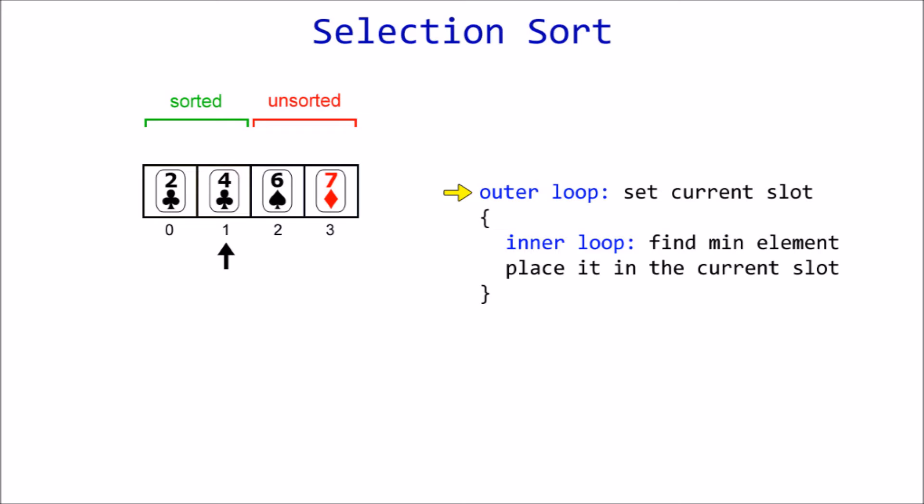The current slot gets incremented to index one, and now we look for the next smallest number in the unsorted section, which is four. We move that to the current slot, and now four becomes part of the sorted section too. Once again, increment the current slot to index two and find the minimum, which is six. Six is already in the current slot, so there's no need to swap this time. Finally, six is added to the sorted section and our job is done. We don't need to bother with the seven, because the last element will always be in its proper place. It can't go anywhere else. The list is now sorted.